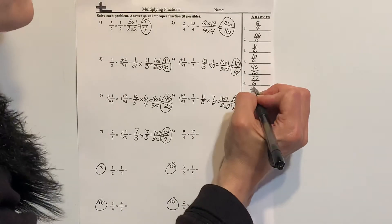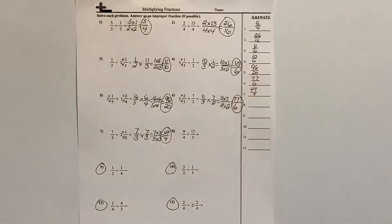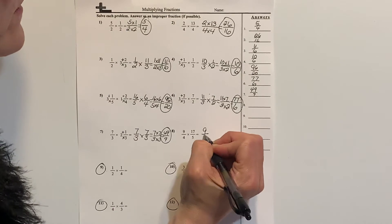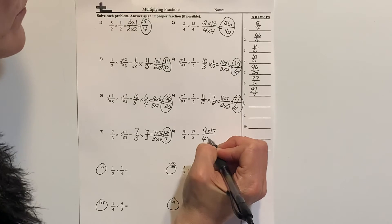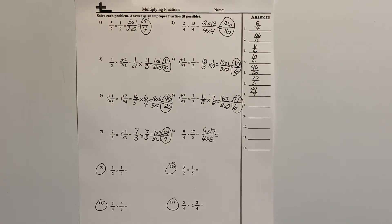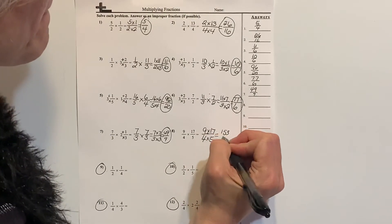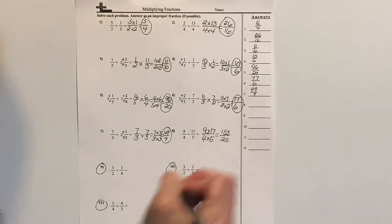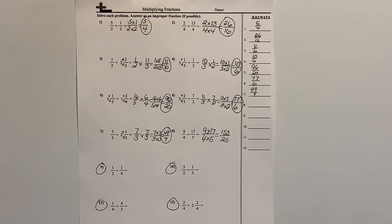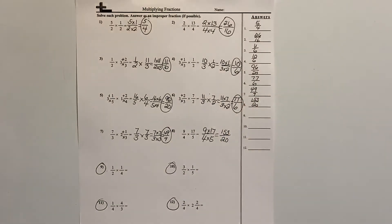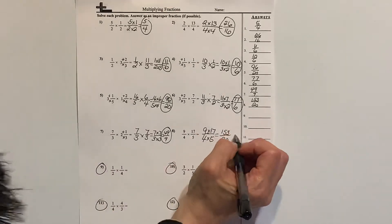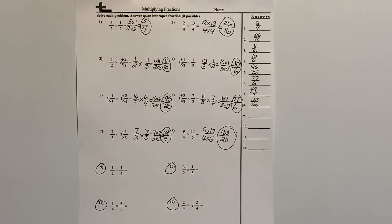Number 8: we've got 9 fourths times 17 fifths, and neither one has to be changed. So we have 9 times 17 over 4 times 5, which is 153 twentieths.